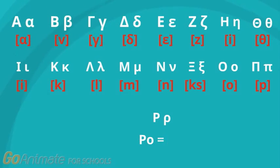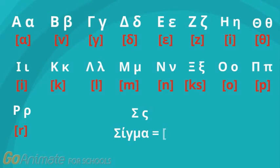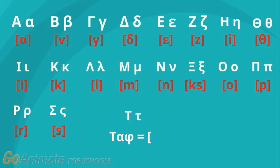Rho is another sound that does not exist in British English. Rho is read as R. Rho, R. Sigma is read as S, as in soap. Sigma, S. Taf is read as T, as in stop. Taf, T.